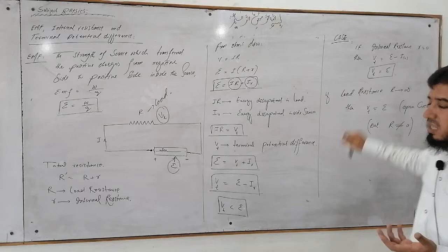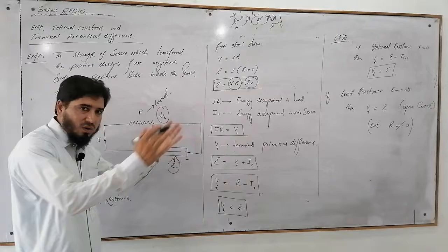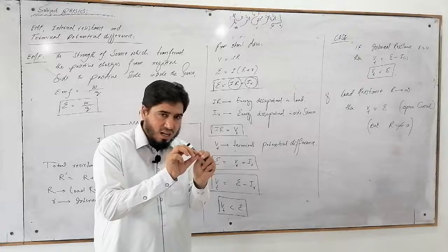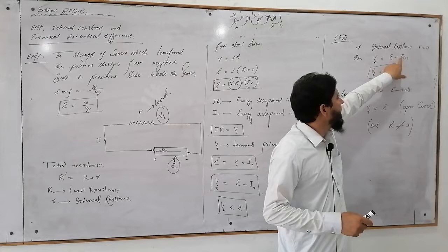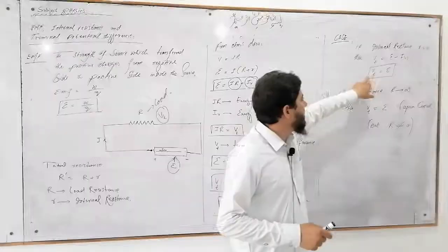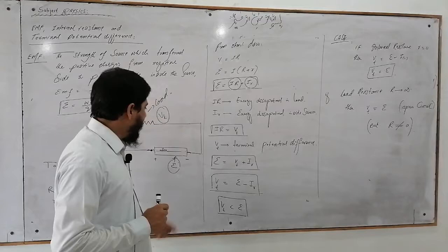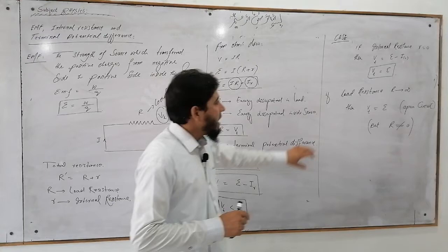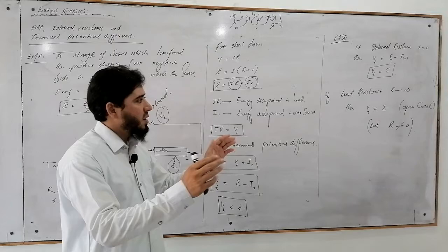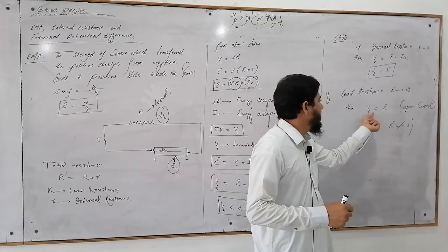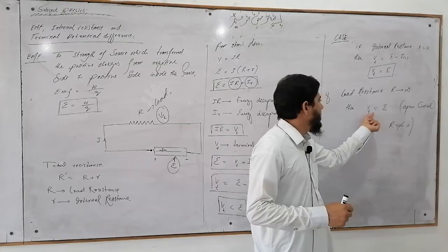Ab agar special case ki baat karein — agar aapse koi puchhe ki yeh barabar kab hoga: agar hamare paas internal resistance 0 ho jaye, yaani suppose karein ki jo cell hai, jo source hai, uske andar resistance nahin hai, uske andar koi dissipation nahin hai. To phir us relation ke mutabiq: VT is equal to EMF minus i times r-small — to maine 0 put kiya, to wo 0 ho jayega, aur phir VT is equal to Electromotive Force ho jayega. Lekin yeh internal resistance hota hai. Ek aur case: agar load resistance intahai zyada ho, yaani open circuit ho, to current again 0 ho jata hai, aur phir bhi VT is equal to Electromotive Force hoga. To yeh hamare paas aaj ka topic hua — umeed hai students aapko samajh aa gayi hogi, and thank you very much.